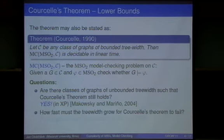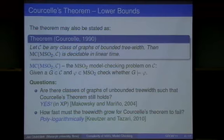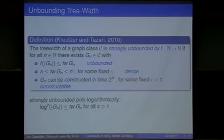So can we go higher? How much higher can we go? The first result was by Kreutzer and Tazari in 2010, and it said basically if the tree-width is bounded by a polylogarithmic function, then the theorem fails.